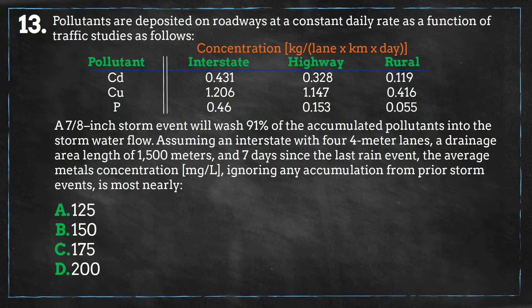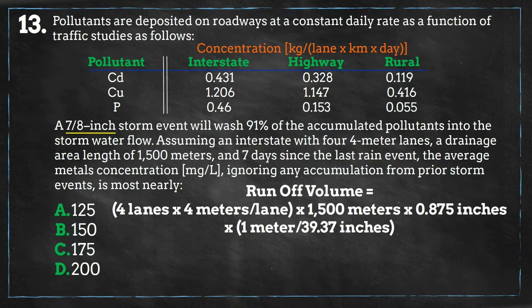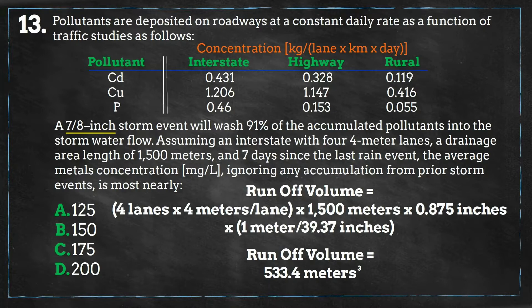Now, we will calculate the volume of stormwater runoff. So, we need the drainage area dimensions as well as the height of the rain event. This was a 7/8 inch rain event and we can calculate the drainage area using the number and width of lanes along with the drainage area length. So, using this information we can plug it into the volume equation of length times width times height and we get a volume of 533.4 cubic meters.